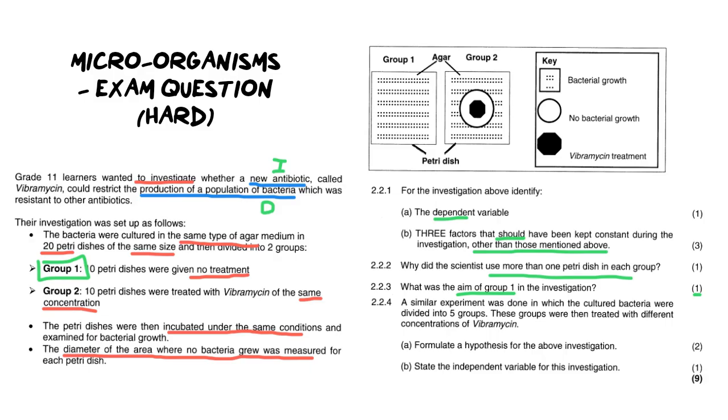Question four. A similar experiment was done in which the cultured bacteria were then divided into five groups. These groups were then treated with different concentrations of Vibromycin. Now what you have to do is you need to formulate a hypothesis for this investigation and then state the independent variable.